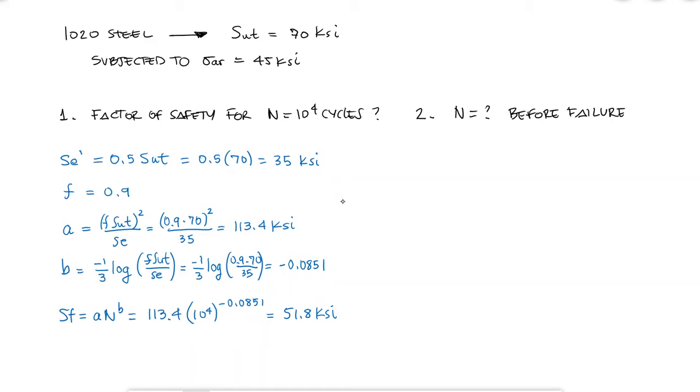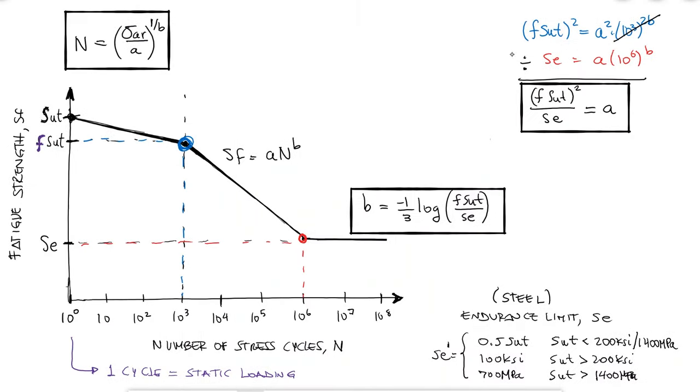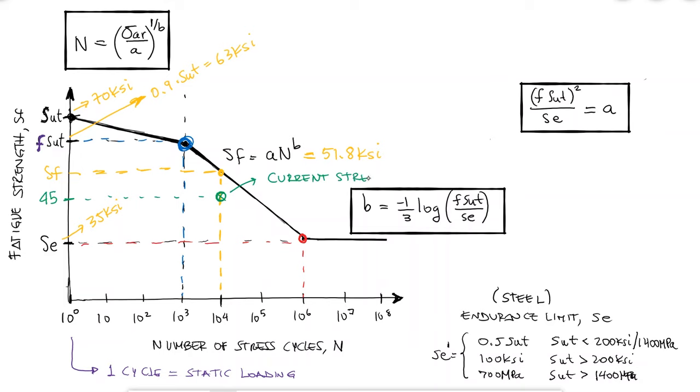If the beam is being subjected to a completely reversed stress of 45 KSI and the fatigue strength is 51.8, then the factor of safety is 1.15. If I take a look at the SN diagram to see what I just did, I would see that for 10,000 cycles, the fatigue strength is 51.8, but I'm only subjecting the specimen to a stress of 45.